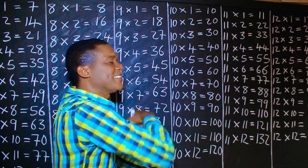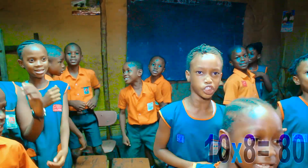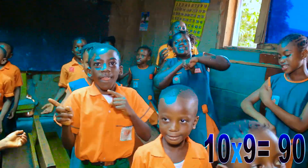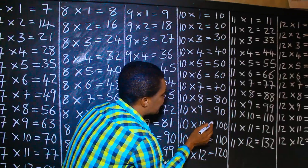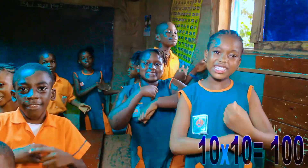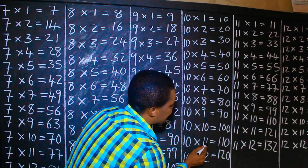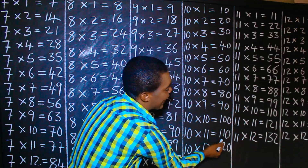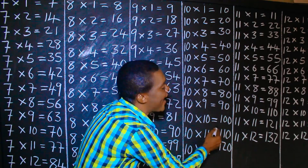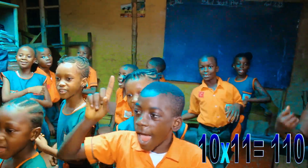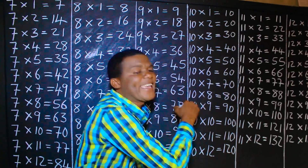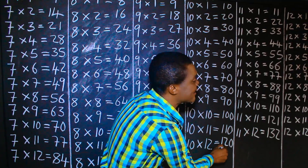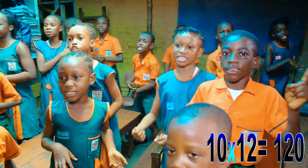Ten times eight is eighty! Ten times nine is ninety! Ten times ten is one hundred! Ten times eleven is one hundred and ten! Ten times twelve is one hundred and twenty!